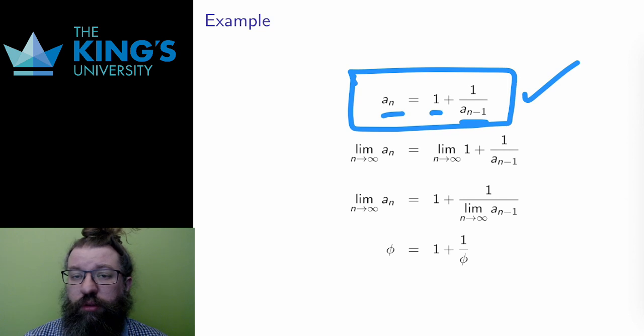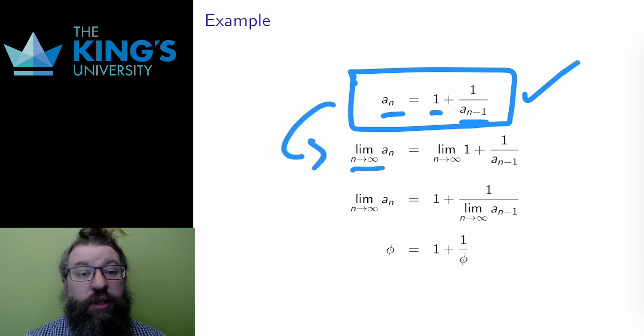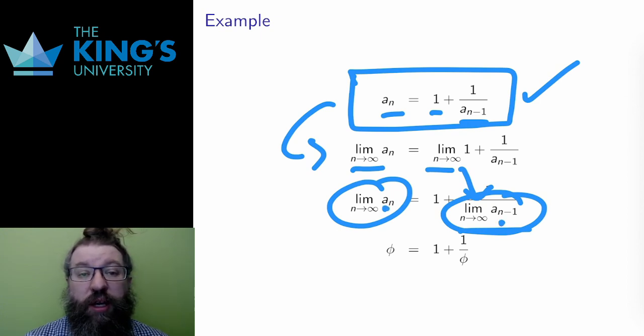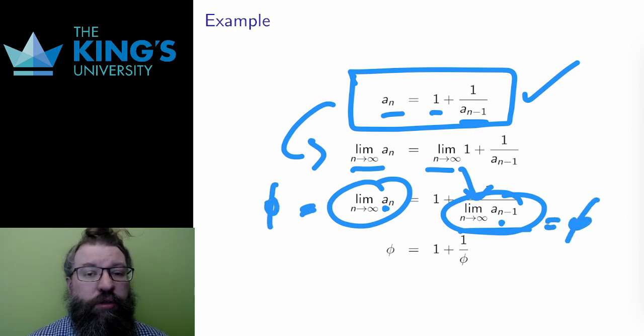And using the limit laws on the right, I can move the limit into the denominator. And when I look at these two limits, they're both limits of the sequence. One just starts a step behind. Well, starting a step behind doesn't matter for the limit. So these are just both the limit of the sequence. Let me give that a name. Let me call that the Greek letter phi. Now I have an equation for phi, which is an equation for the limit.